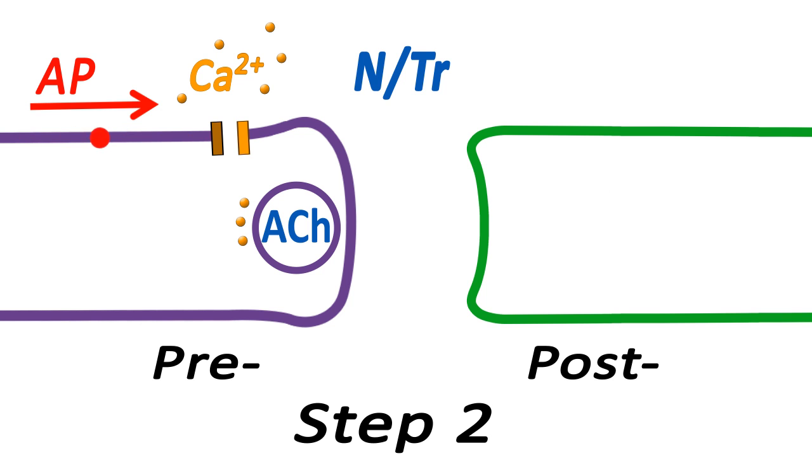Step 2. Now the signal is the calcium ions. In response, synaptic vesicles fuse with the presynaptic membrane and release ACh into the synaptic cleft.